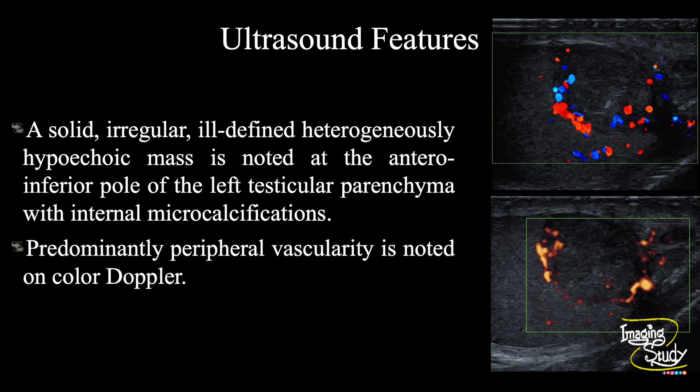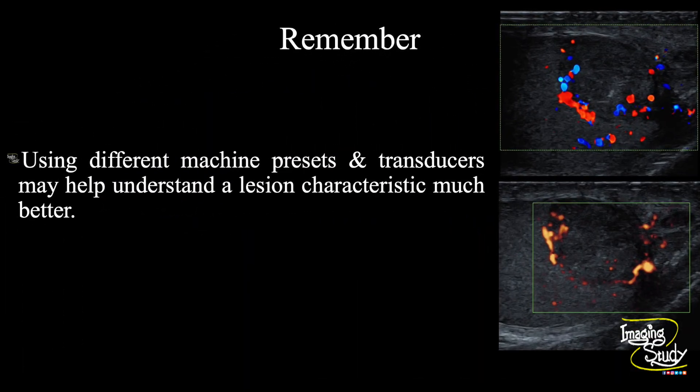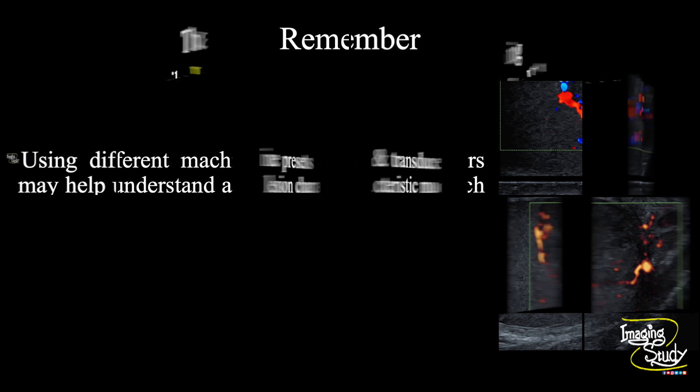In summary, an irregular, ill-defined, heterogeneously hypoechoic mass is noted at the antero-inferior pole of the left testicular parenchyma with internal microcalcifications. Predominantly peripheral vascularity is noted on color and power Doppler. These features conclude this as a case of testicular solid mass, possibly of malignant nature. The take-home message: using different machine presets and transducers may help understand lesion characteristics much better. Thank you for watching — don't forget to subscribe to our YouTube channel and visit imagingstudy.com for more cases.